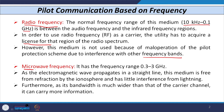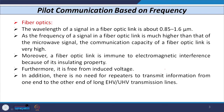The next way is to use microwave frequency, whose frequency band is 0.3 to 3 gigahertz. As electromagnetic waves propagate in a straight line, this medium is free from refractions and has little interference from lightning surges. Furthermore, its bandwidth is much wider compared to the carrier channel, so it can carry more information — that is another advantage.